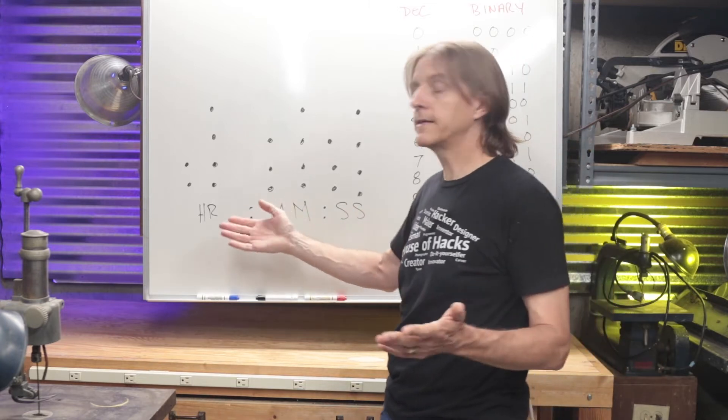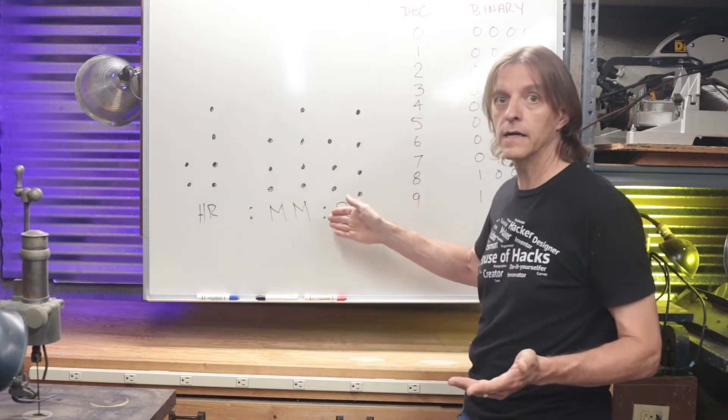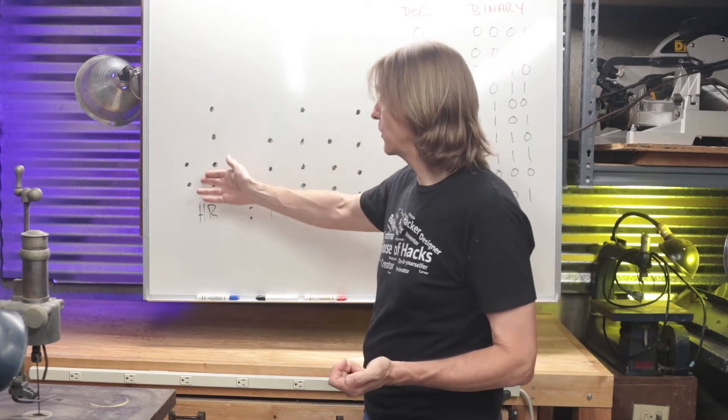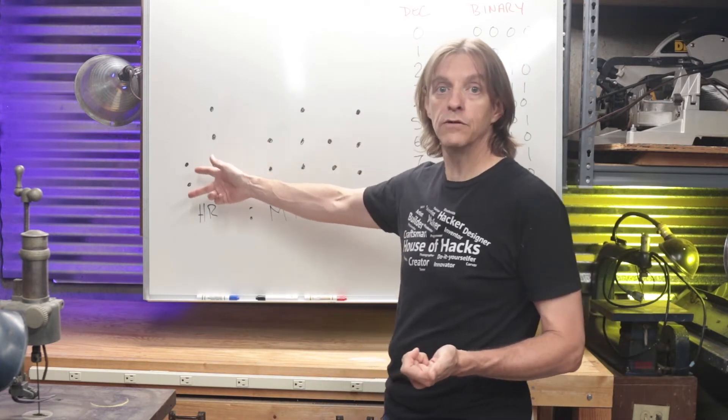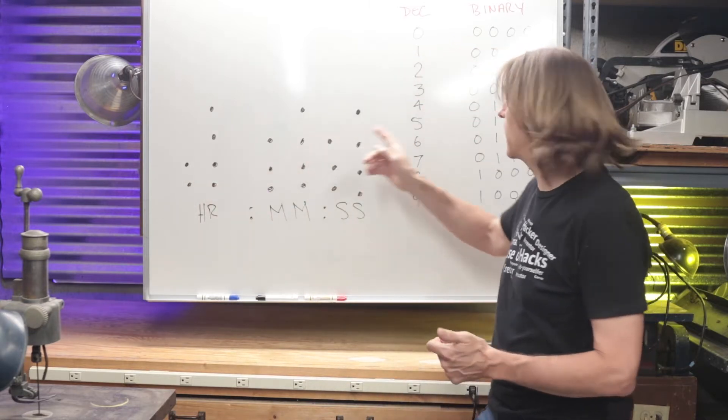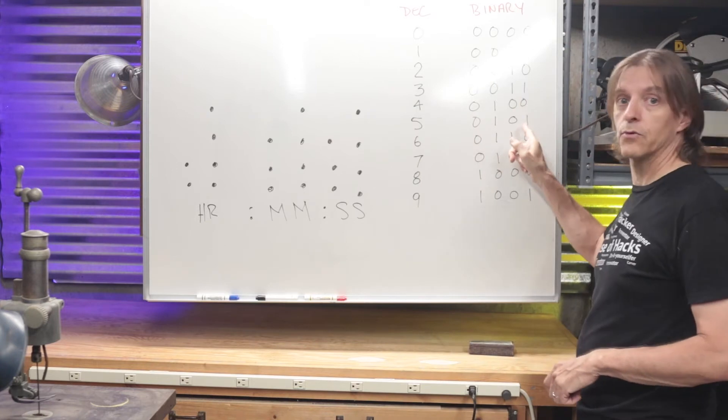Because on a clock, none of the tens digits go all the way to 9, we don't need a full 4 bits for each of the tens columns. Hours, for example, only go to 2, so we only need 2 bits for a 24 hour clock. The minutes and the seconds only go to 5, and so we only need 3 bits for those.